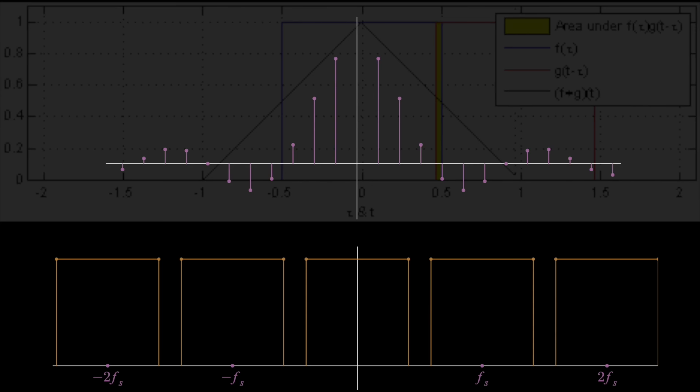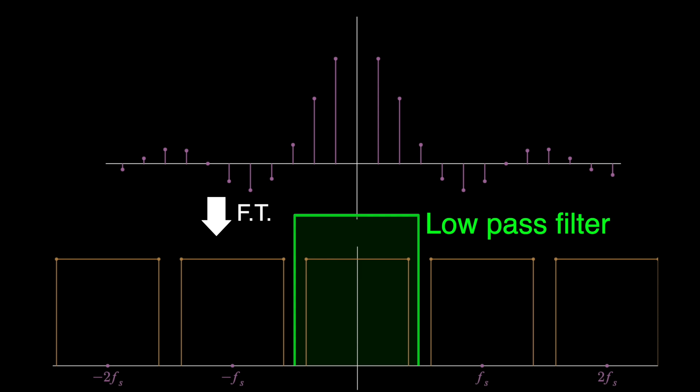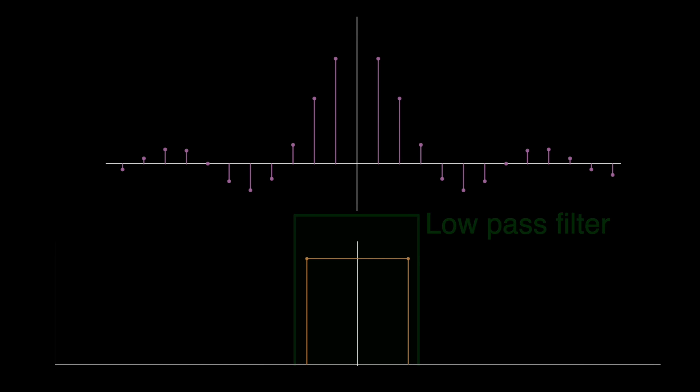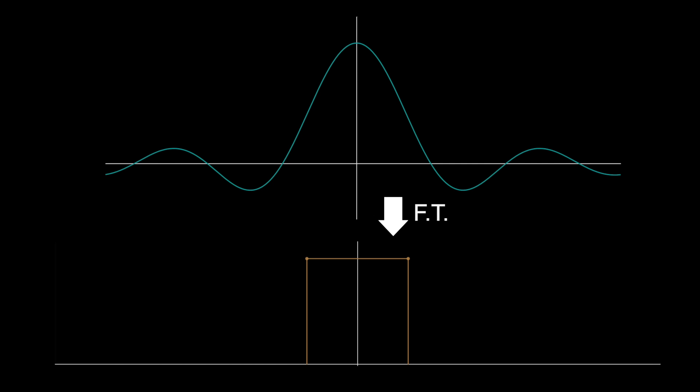But now, if someone gave you this sampled function, whose frequency domain looks like this, you could apply a low-pass filter to the sampled signal and remove the higher frequencies, giving you back your original frequency domain, centered at zero, and thus you could reconstruct your signal.